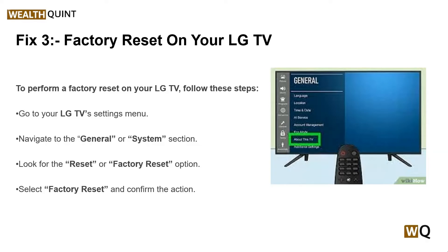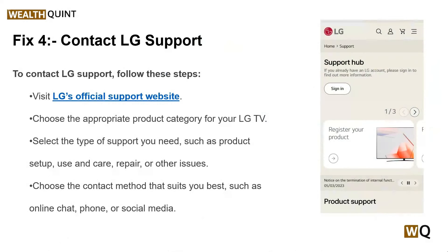To perform the factory reset, go to your LG TV settings menu and navigate to the general or system section. Look for the reset or factory reset option, select factory reset, and confirm the action. If your issue is still not resolved after this, it is time to contact LG support for further assistance.